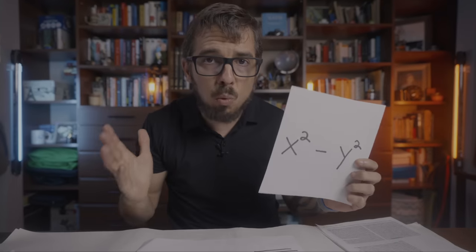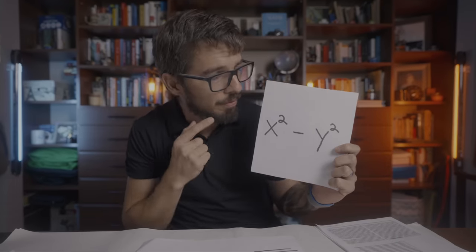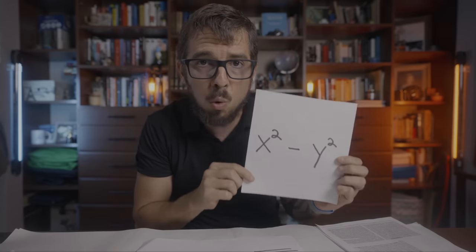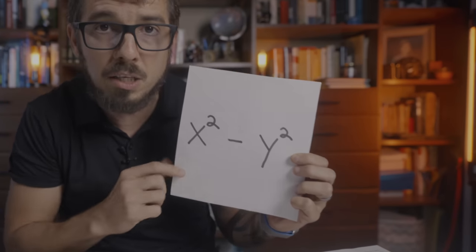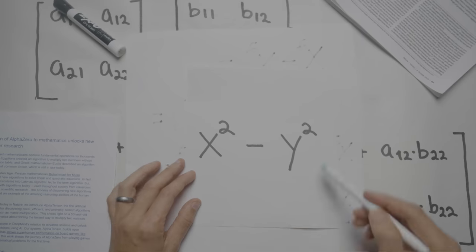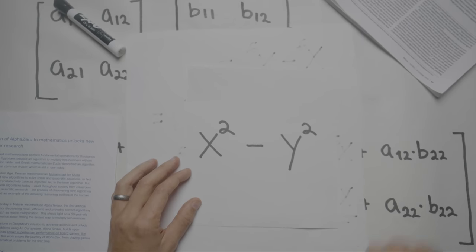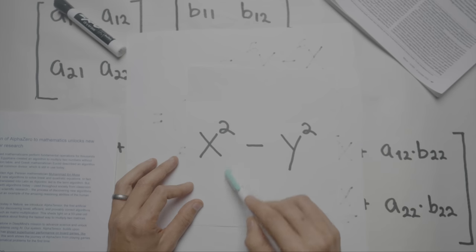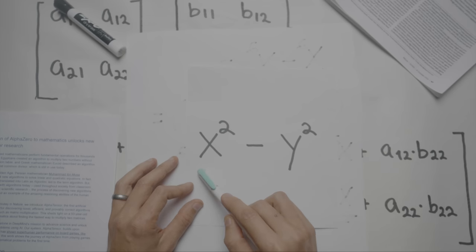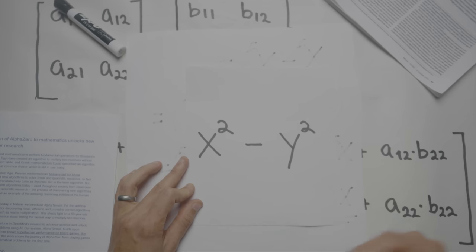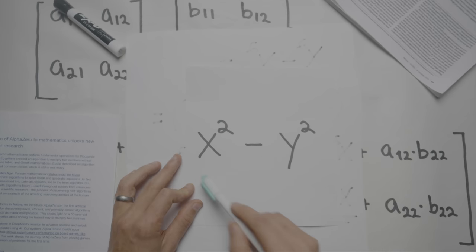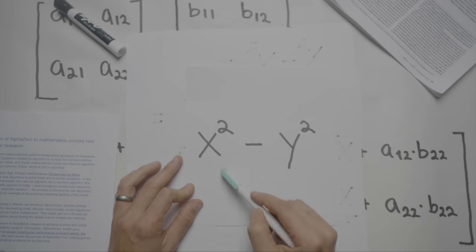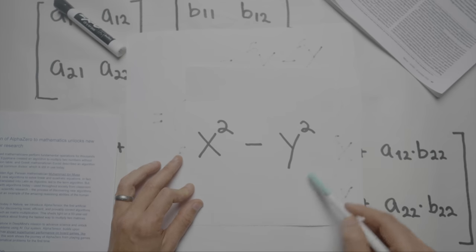But let me show you first how we got here. Let's say we want to solve this simple equation: x squared minus y squared. This problem requires two multiplications — x times x and y times y — and one subtraction, this term minus this term.